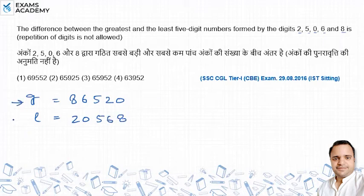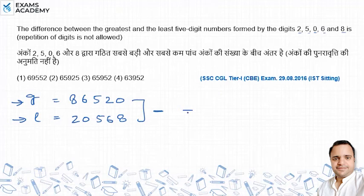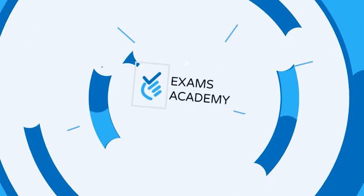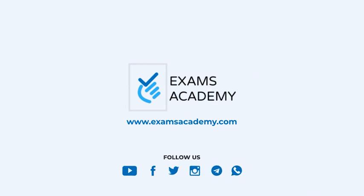So, we have the greatest value and the least value. Now we find the difference between the two to get the total value. Thank you.